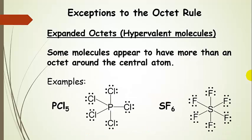Our final category is expanded octets, also known as hypervalent molecules. Basically, they appear to have more than an octet around the central atom. Phosphorus appears to have 10 electrons surrounding it in phosphorus pentachloride.